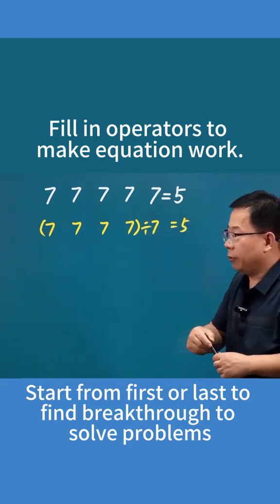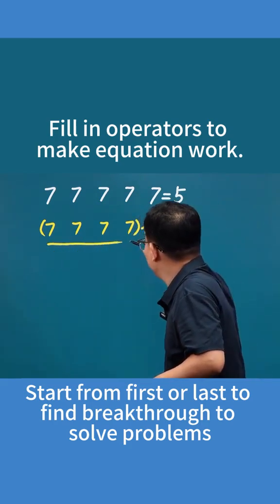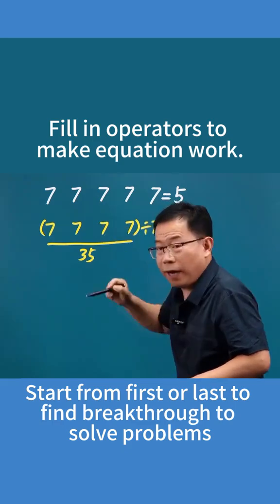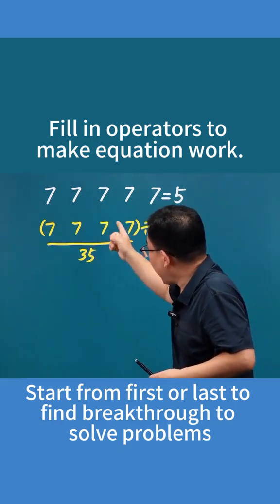Which number divided by 7 equals 5? Obviously, as long as the four sevens add up to 35, it works. But if you add up four sevens, you only get 28, which isn't enough, so there must be multiplication involved.